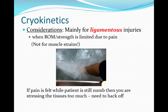Cryokinetics is most commonly used for ligamentous injury — the most common application is seen with ankle sprains, most typically lateral ankle sprains. It is good to use when range of motion or strength is limited due to pain. Cryokinetics is not good for muscle strains as active early exercise could damage the healing muscle. If pain is felt while the patient is still numb, there is too much stress being applied and we need to back off the treatment. The exercise may be simple, such as ankle pumps, toe raises, heel raises, or even simple standing or balance activities. Pain is always our guide to any rehabilitation protocol, but especially during cryokinetics.